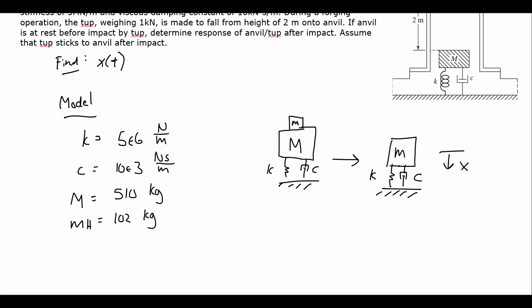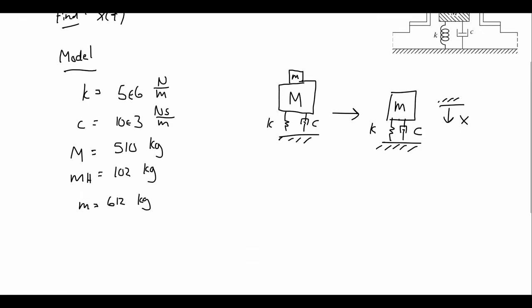We know from our picture we don't need Lagrange's equations here — it will be straightforward. The equivalent mass, once they stick together, is the sum of the two values: 612 kilograms. The modeling step is not too tricky because it's already abstracted down to a simple spring-mass-damper. The equation of motion is 612x-double-dot plus 10,000x-dot plus 5,000,000x equals zero. Once they impact, there are no external forces — it moves based on initial conditions only.